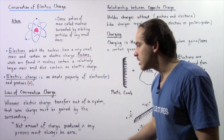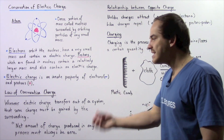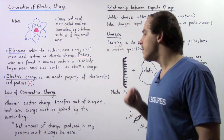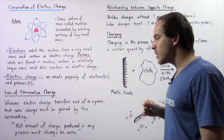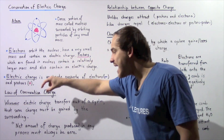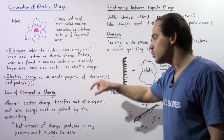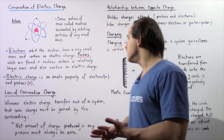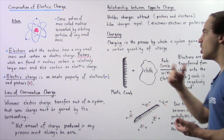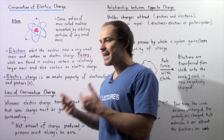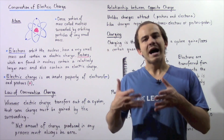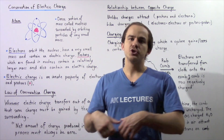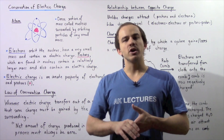Whenever electric charge transfers out of a system, that same quantity of charge must be gained by the surroundings. So that implies that the net amount of charge produced in any process must always be zero. Now let's move on to the process known as charging. Charging is essentially the process by which electric charge is transferred from one system or object to another system or object.